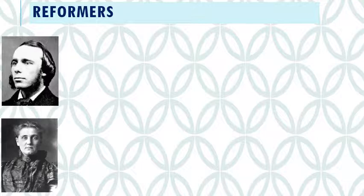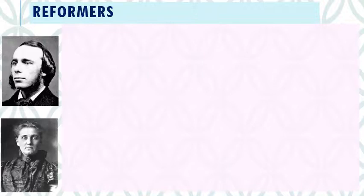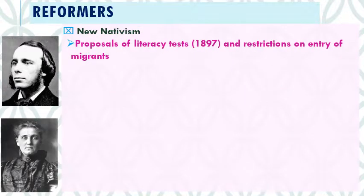With cities full of problems and difficulties, reformers tried to work on those issues and make America better, safer, and cleaner, attacking reforms from many different angles. Some reformers thought the problem was solely too many immigrants, so in the 1880s and 90s we see a rise in nativism. The solution they proposed was simply restricting migrants — enacting literacy tests and restricting entry so the problem would be solved.